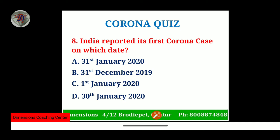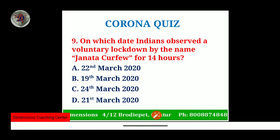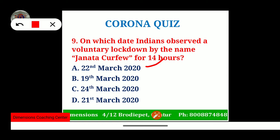India reported its first coronavirus case on 30th January 2020 — the index case mentioned earlier from Thrissur, Kerala. Next, on which date did Indians observe a voluntary lockdown called the Janata Curfew? It was observed for 14 hours, from 7 AM to 9 PM. The Janata Curfew was observed on 22nd March 2020, which was a Sunday. Two days later, the government officially announced the total lockdown of India.